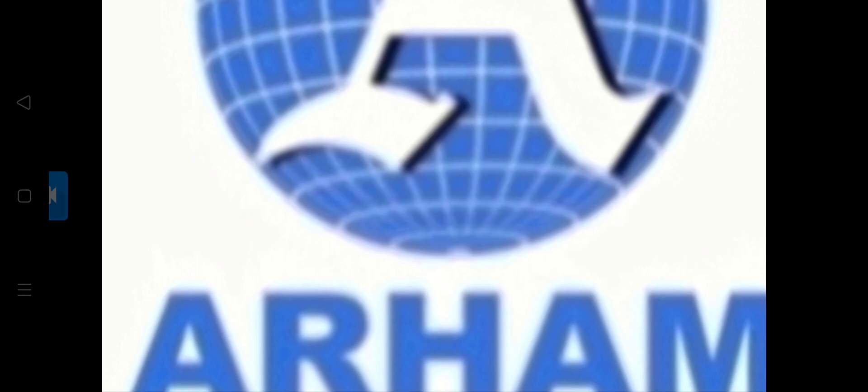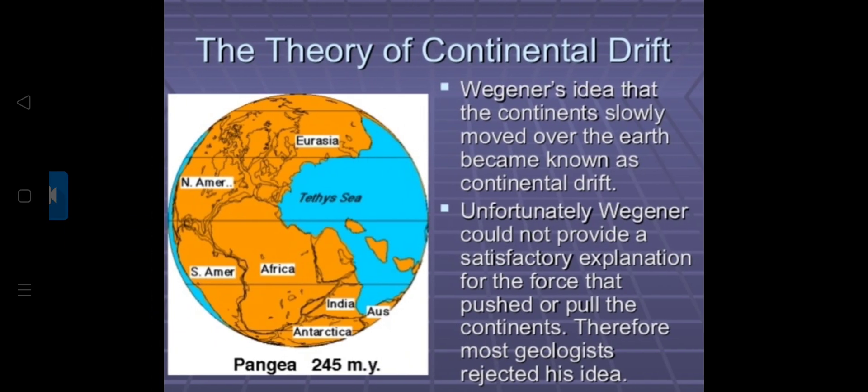In the last class, I spoke about Wagner's theory of continental drift. There are two theories in this chapter: the Davis concept of cycle of erosion and Wagner's theory of continental drift. Now we are going to study the Davis concept of cycle of erosion.